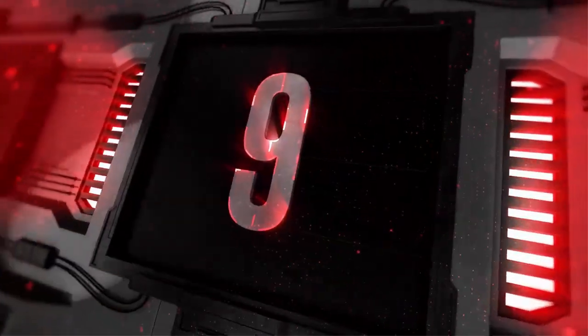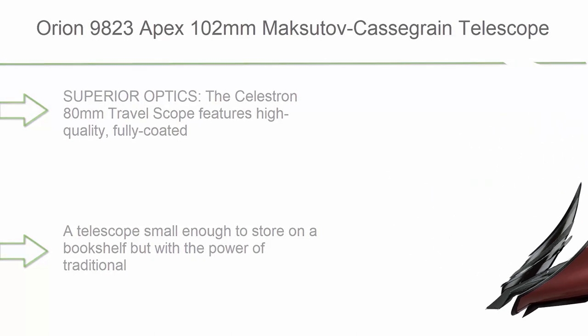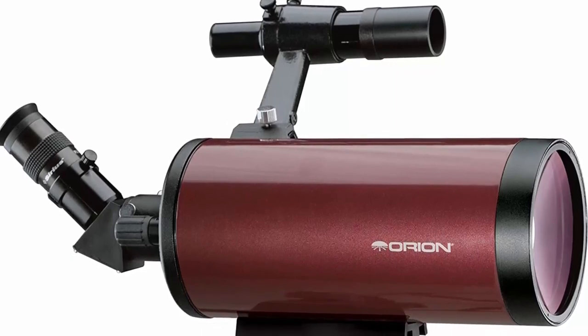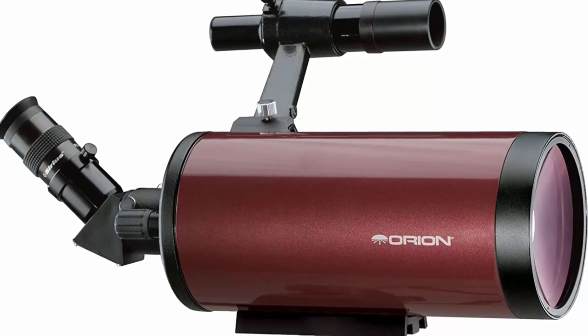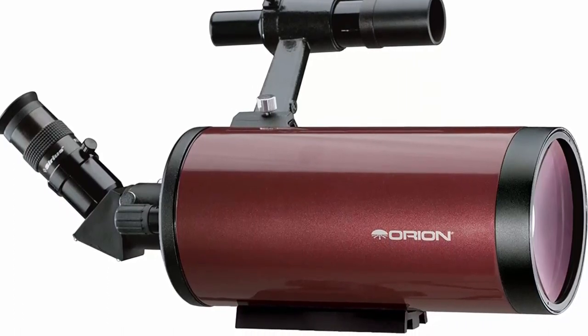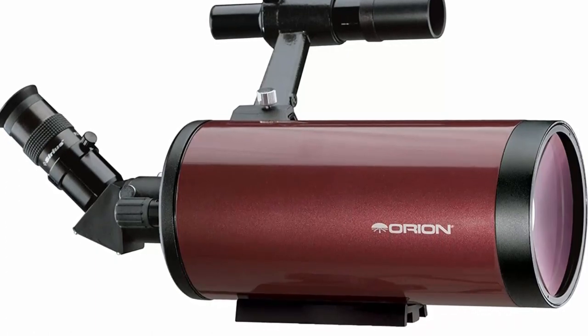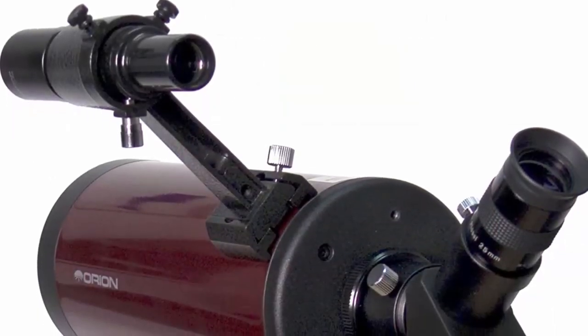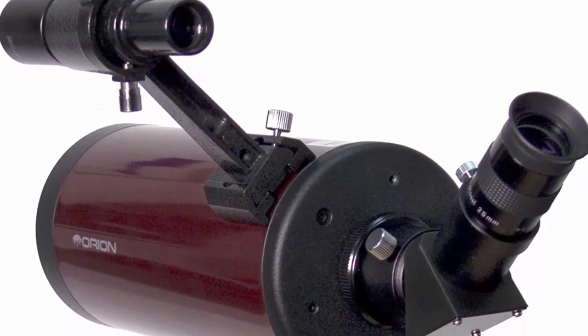Top 9. Celestron NexStar 90 SLT Computerized Telescope. Compact and Portable Maksutov-Cassegrain Optical Design, Sky-Align Technology, Computerized Hand Control, 90mm Aperture Computerized Star Locating Telescope. The Celestron NexStar 90 SLT is a computerized telescope that offers a database of more than 40,000 stars, galaxies, nebulae, and more. The telescope locates your object with pinpoint accuracy and tracks it.